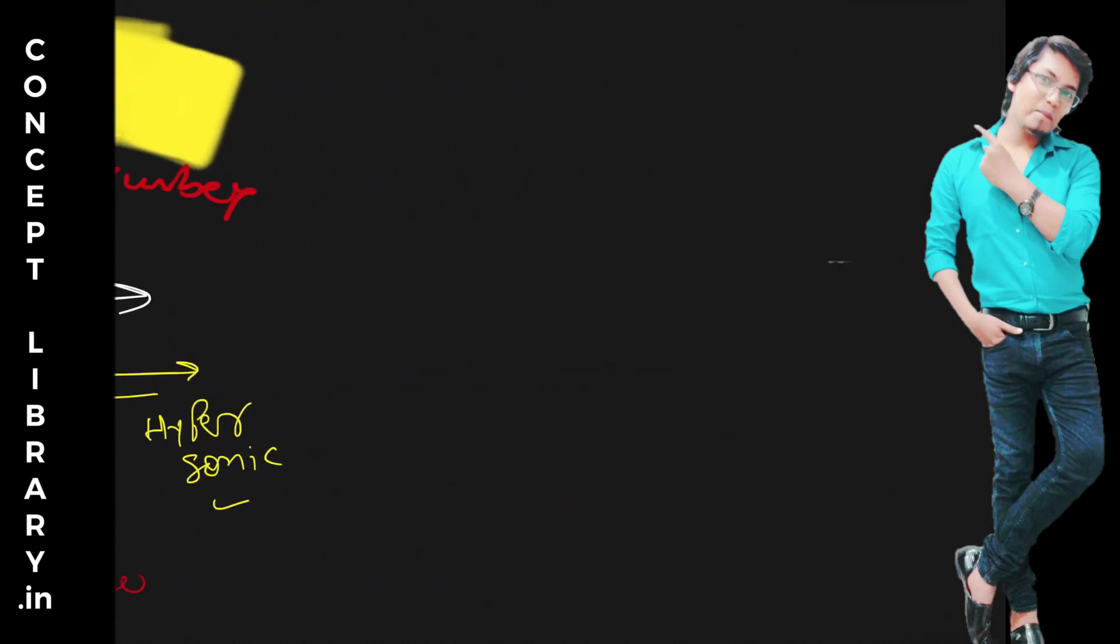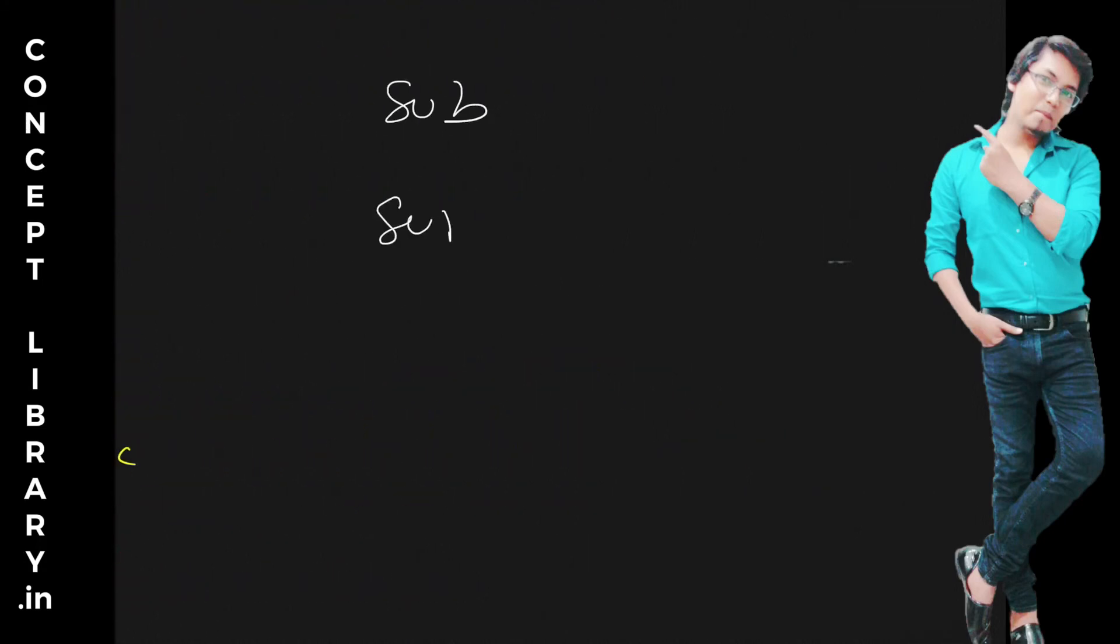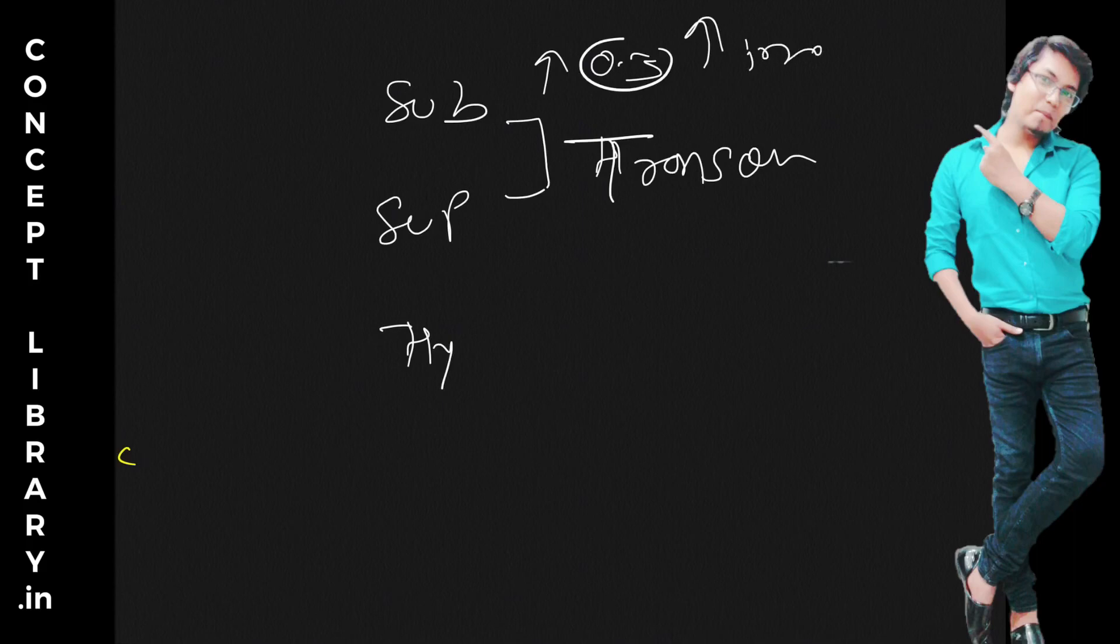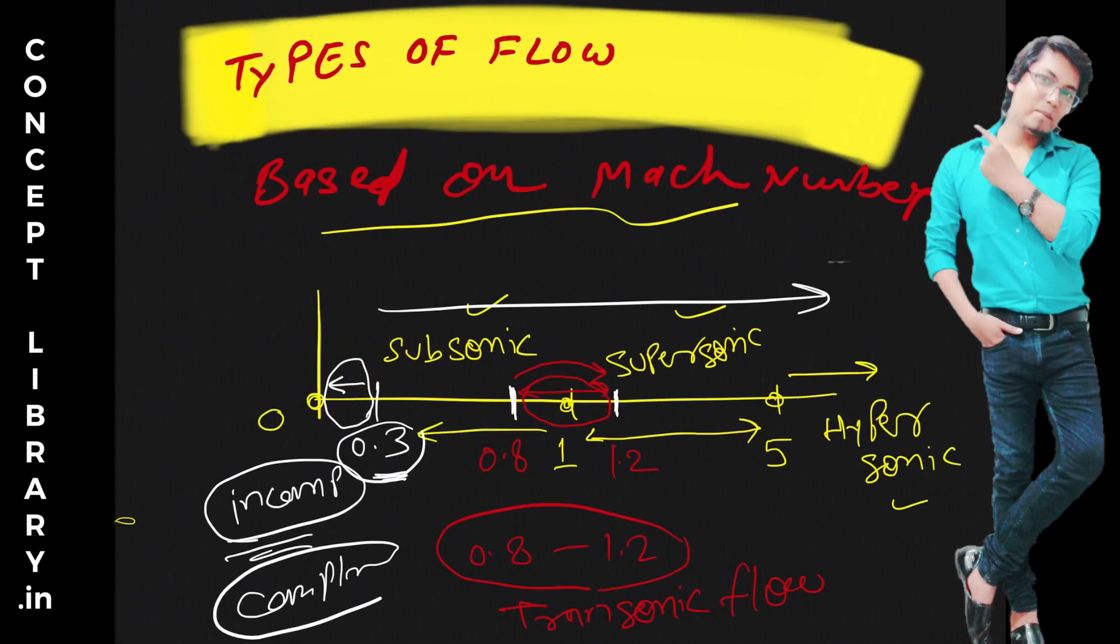So like subsonic flow, and then we have supersonic flow, and then we have hypersonic flow. In between 0.8 to 1.2 we have transition, transonic flow, right? Transonic flow. And in subsonic itself there is less than 0.3, that is called incompressible flow. So I hope you are clear with this.